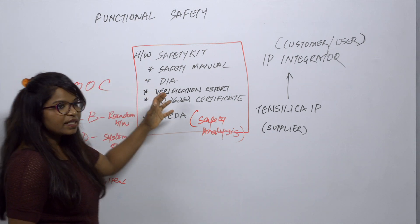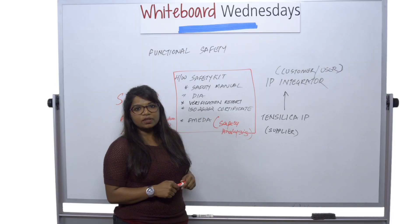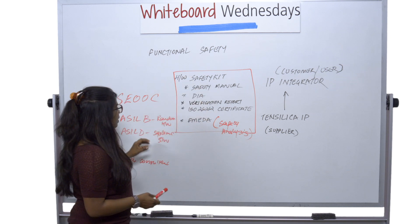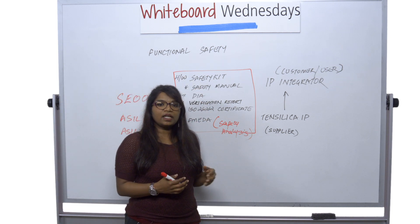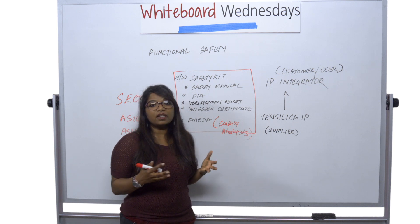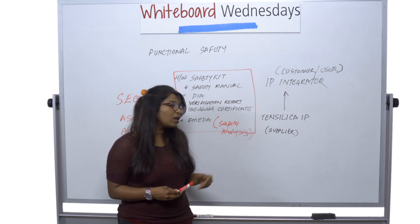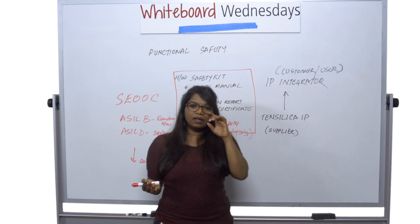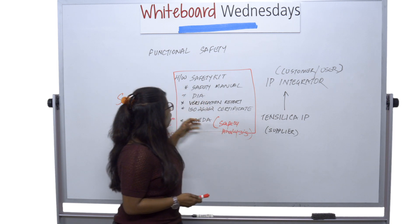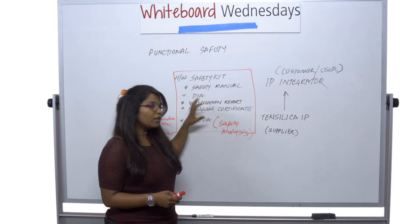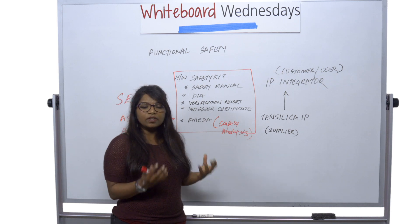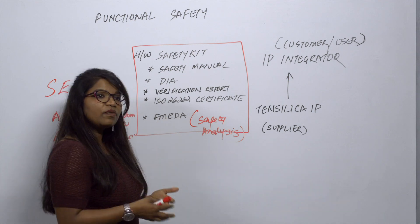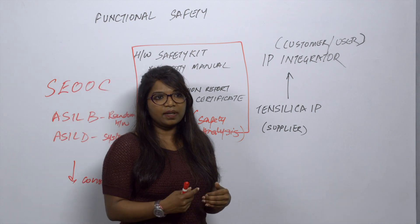Now that we have this certificate, we have a safety kit. Once a customer comes into the picture, they receive a hardware safety kit with all of the necessary documents, but the verification and safety analysis is done specifically for their configuration. If you know about Tensilica, it is a configurable core with a variety of options a customer can choose. So although the certificate and safety manual represent one package, the safety analysis and verification are done specifically for the targeted configuration a customer picks.